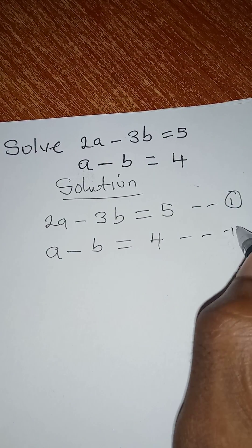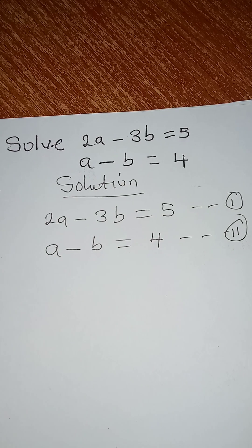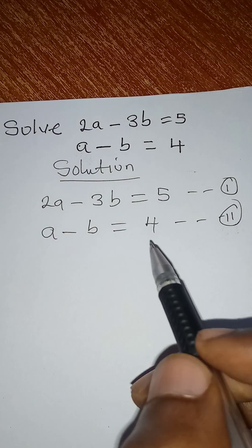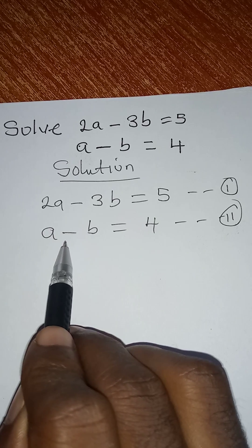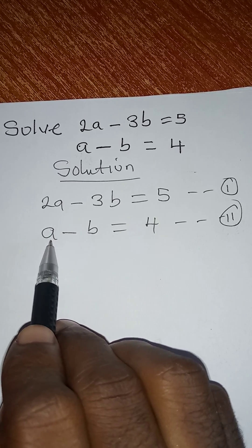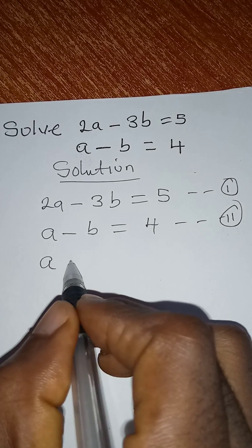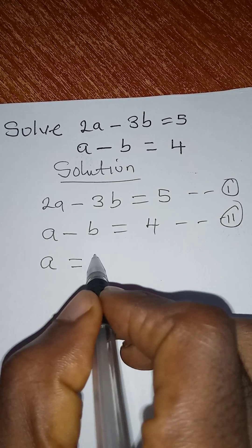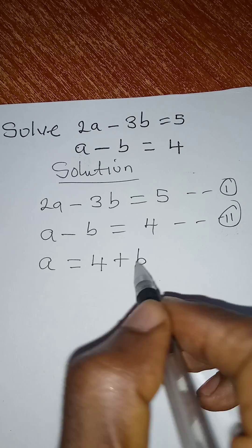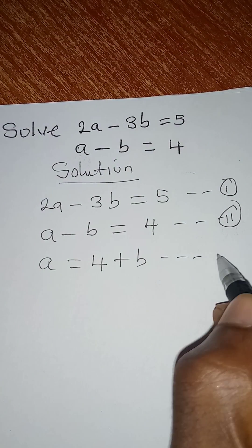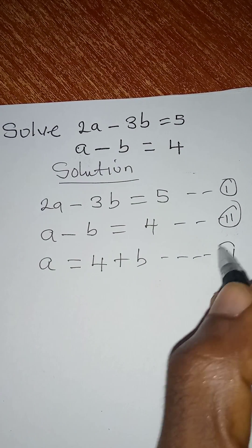This is our equation 2 and now I want to use substitution method to work this. So I'll pick equation 2 and make a the subject. So if I make a the subject then a will be equal to 4 plus b and now we can call this our equation 3.